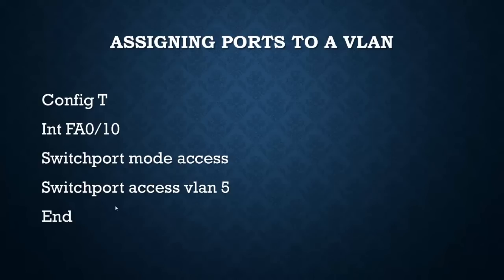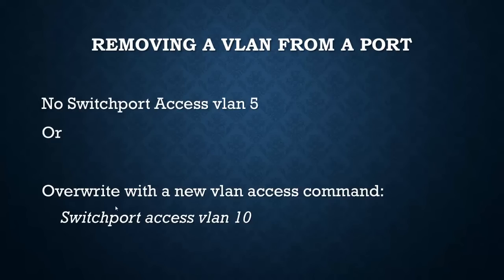To remove a VLAN from a port, do 'no switchport access vlan 5', or you can just override it. Each access port can only have one VLAN on it. So if you did 'switchport access vlan 5' and meant VLAN 10, you can just override it with 'switchport access vlan 10.' It's a matter of style - some people do 'no' in front of everything first to remove the old and then make the new. So from global mode: 'vlan 5', enter, 'name slackers', enter, exit. Then 'interface fa0/10', enter, 'switchport access vlan 5.' That's it.